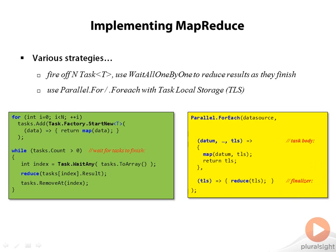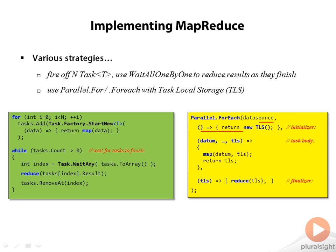Who creates these TLS objects? There's one more parameter in the call to parallel ForEach: an initializer. This is a lambda expression with no parameters — notice the empty parentheses — and its function is to return a new instance of your task local state. So the parallel loop now has four parameters: the data source, the initializer, the body of the loop, and the finalizer. The initializer is called exactly once to initialize the TLS for each task. The finalizer is also called once per task just before the task exits. It's very important to note that the initializer and finalizer may execute concurrently and thus should be written in a thread-safe manner.